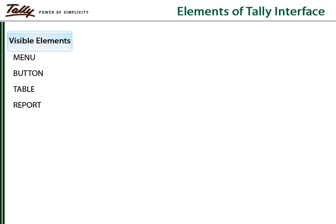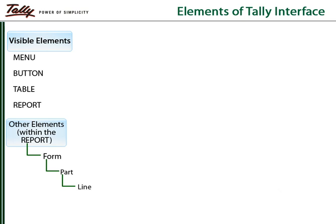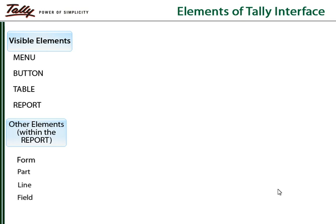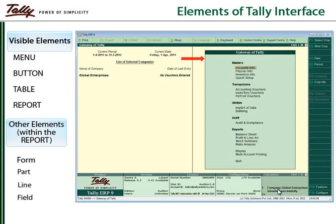There are other elements comprising a report, namely Form, Part, Line, and Field, in a predefined hierarchical order. A menu contains a list of menu items, clicking on which leads to another menu or a report.